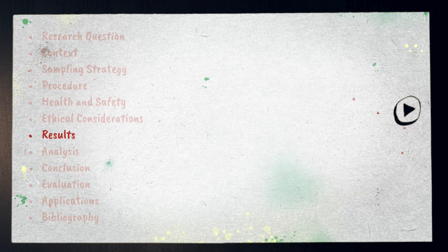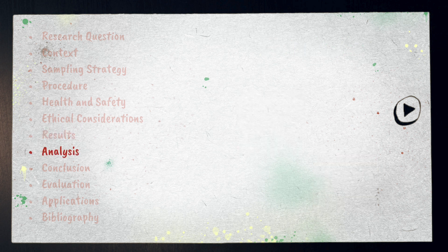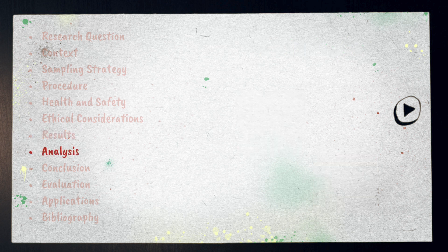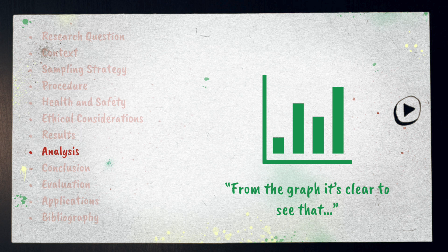The results section is where you present your tables, graphs, and diagrams that display your data. The analysis section is where you identify patterns within the data. It's tempting to present a graph and discuss it with a sentence like 'from the graph it's clear to see that...' and then describe the trend you observe, but in my opinion this is not very good.